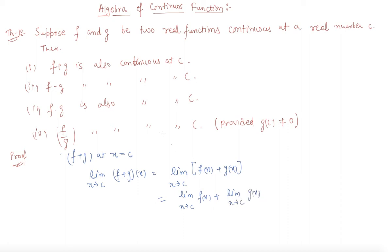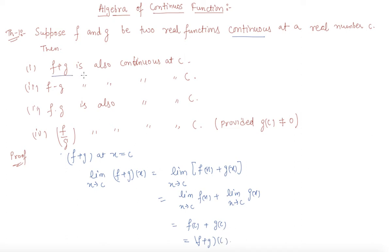As we have clearly stated, these two functions are continuous at the real value C. So we can say this equals F(C) plus G(C), which is (F plus G)(C). By this definition, F plus G is also continuous at C.